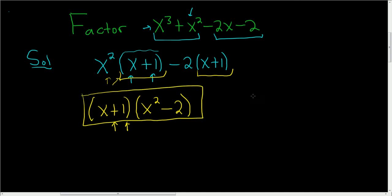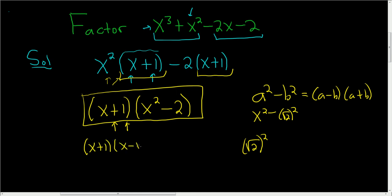You could take it a step further. Recall that a squared minus b squared is equal to a minus b times a plus b. So you can work with x squared minus 2 by thinking of 2 as the square root of 2 squared. So our real final answer ends up being x plus 1, x minus the square root of 2, x plus the square root of 2. So that's another possibility. I hope this helps.